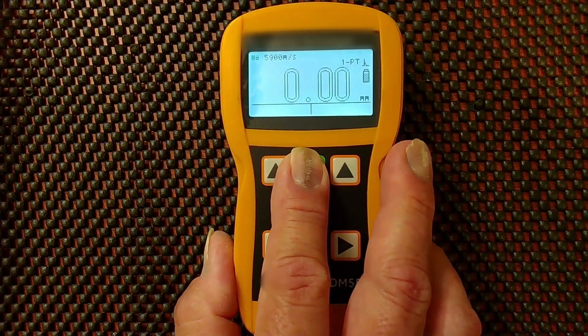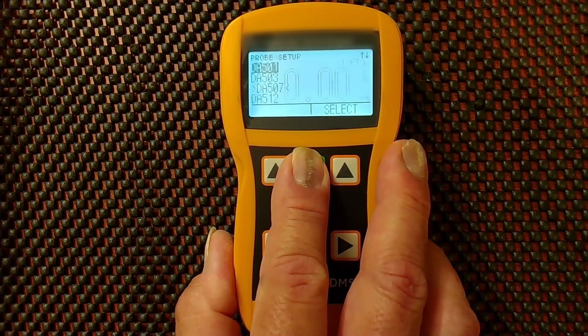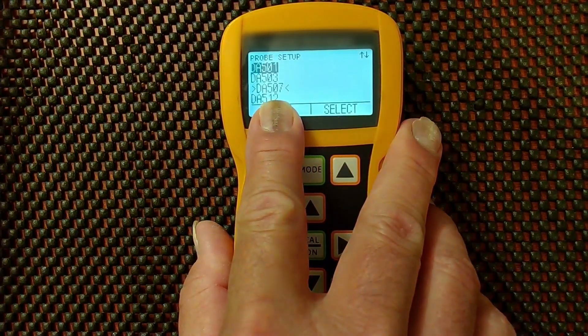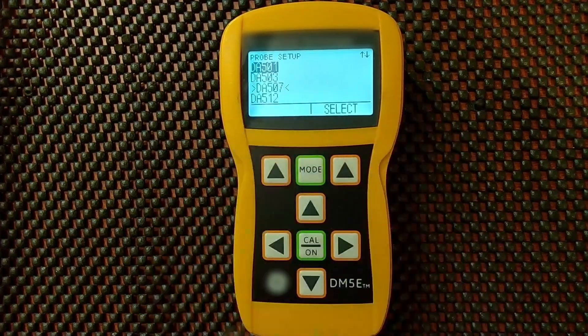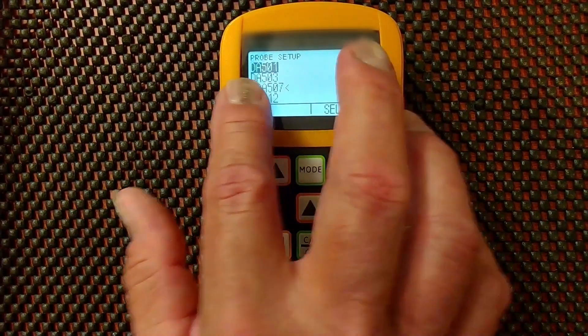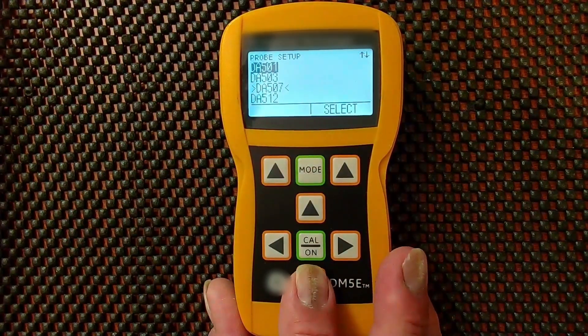If we press the mode button and go back to the main menu, then come back, we see the DA507 is still the selected probe. But the highlighter is back at the top of the list. The cursor is back at the top of the list.